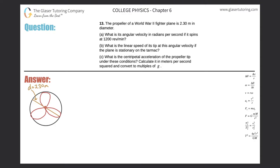Number 13: A propeller of a World War II fighter plane is 2.3 meters in diameter. Letter A: What is its angular velocity in radians per second if it spins at 1200 revolutions per minute? All right, so letter A...